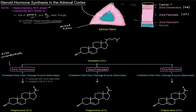The zona fasciculata is going to be important mostly for making glucocorticoids, though it can also make androgens. So glucocorticoids are primary, with androgens in parentheses. Then the innermost layer, shown in the dark portion, is the zona reticularis, and that's mostly important for making androgens — male sex steroids. So the three main products are mineralocorticoids, glucocorticoids, and androgens.